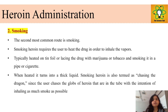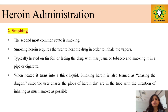The second most common route is smoking. Heroin is combined with marijuana or tobacco in the form of cigarettes. When heated, it becomes a thick liquid. This method is also called 'chasing the dragon' because of its potency.